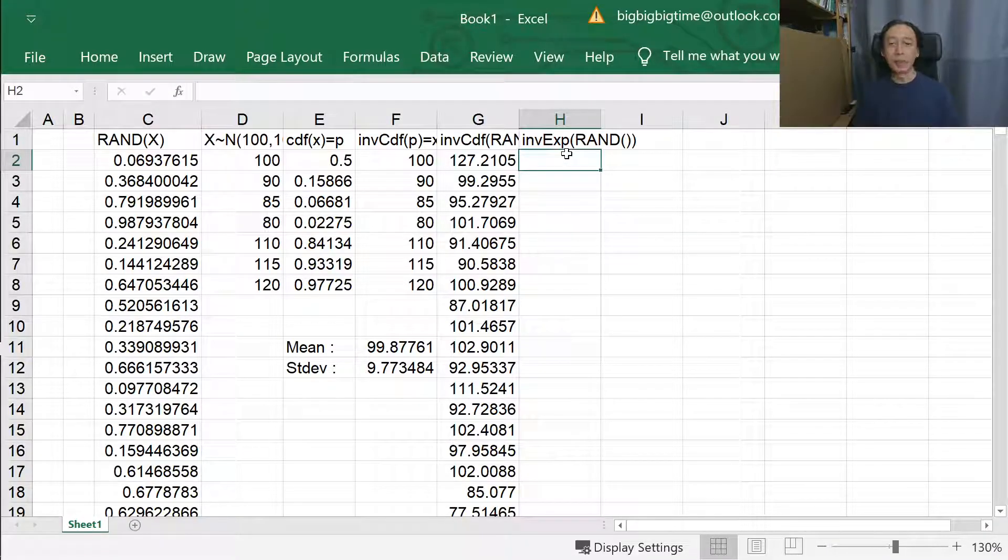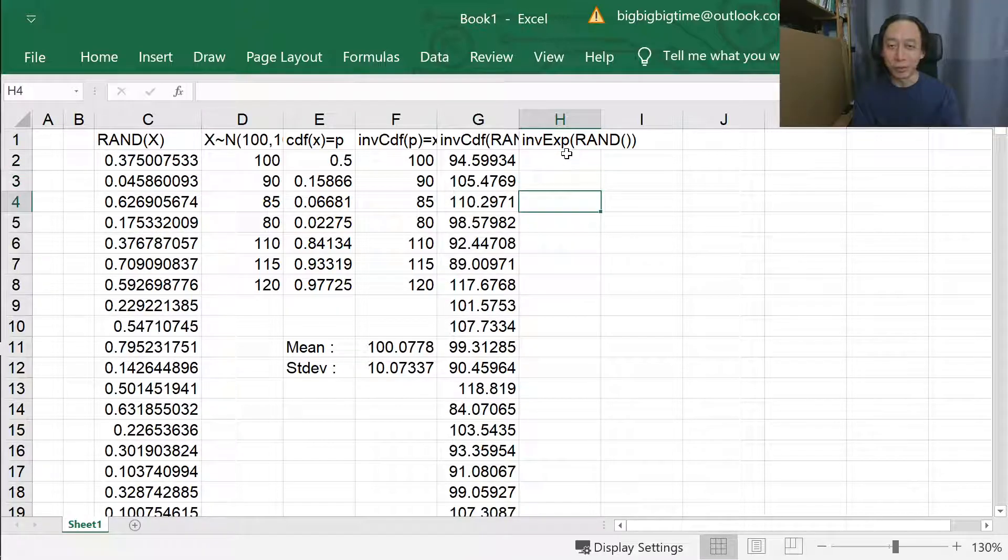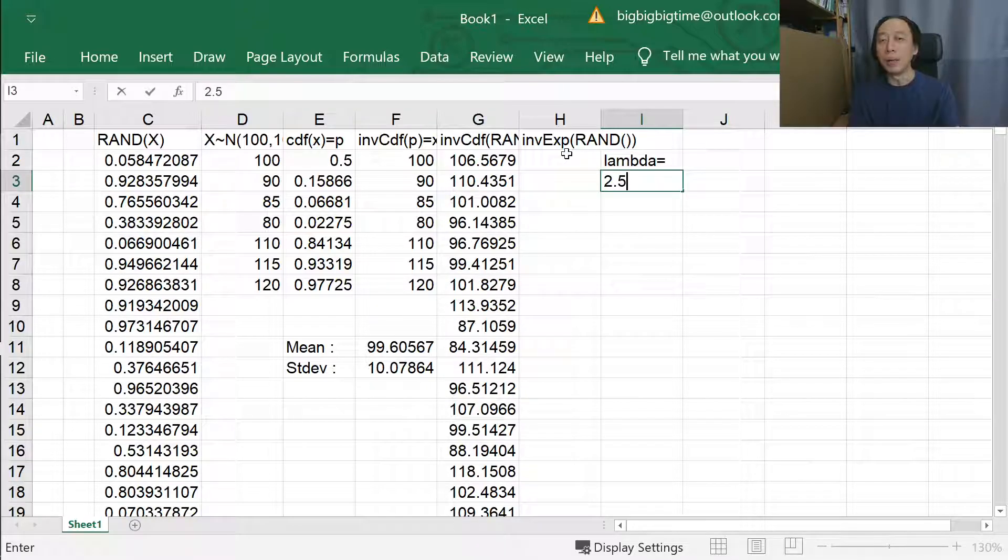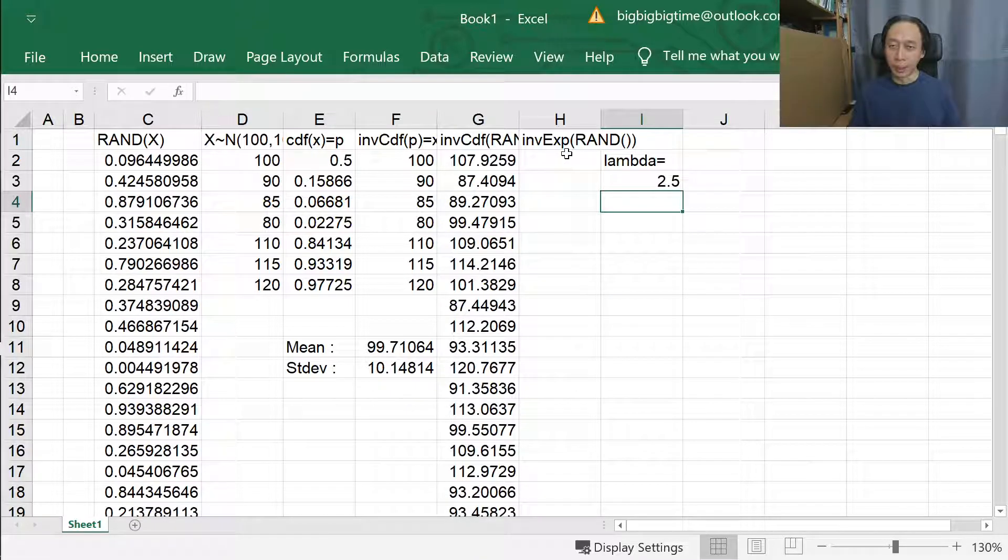Now let's come back to our Excel screen. Since now we understand how to implement the formula for inverse CDF, we don't need Excel to give us any pre-programmed formula anymore. All we need to do is we need to fix a lambda. Let's fix our lambda here. Let our lambda be 2.5.